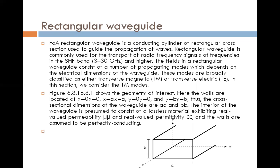The field in a rectangular waveguide consists of a number of propagation modes which depend on the electrical dimension of the waveguide. These modes are broadly classified as either Transverse Magnetic or Transverse Electric field. The geometry here shows the walls are located at X=0, X=A, and Y=0, Y=B. The cross section dimensions of the waveguide are A and B.